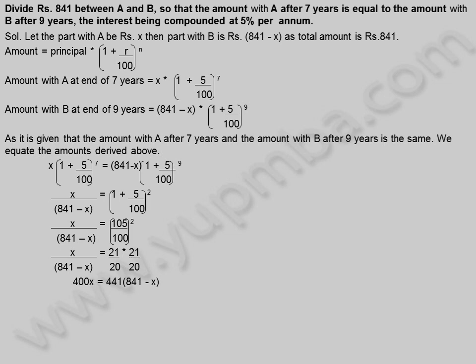400 X is equal to 441 into 841 minus X. 400 X is equal to 441 into 841 minus 441 X. 841 X is equal to 441 into 841. X is equal to 441.